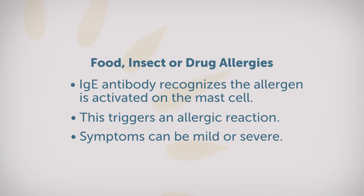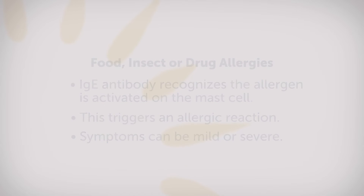In people with food, insect, or drug allergies, the body produces an antibody called IgE that attaches to the mast cells and triggers the allergic reaction. These symptoms can be mild or very severe.